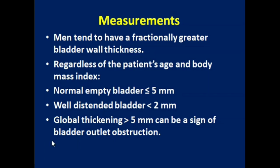Normal empty bladder wall thickness is equal to or less than five millimeters. A well-distended bladder wall measures two to three millimeters. Global thickening of more than five millimeters can be a sign of bladder outlet obstruction.